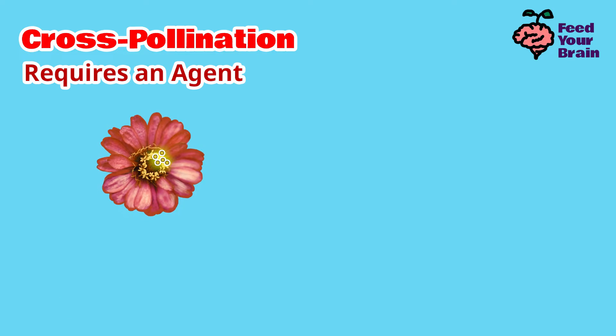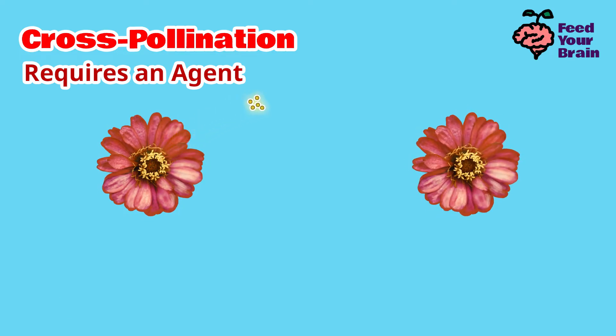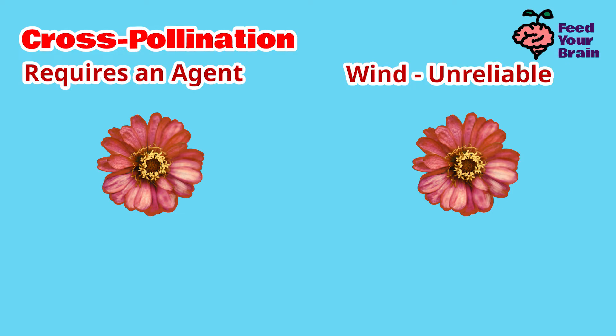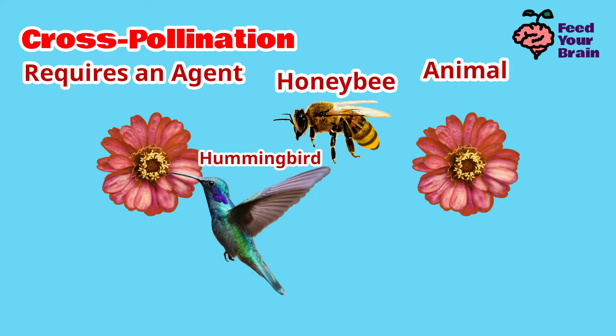Cross-pollination requires an agent to take pollen from one flower and carry it to another flower. The agent can be the wind, though that is not common as it is difficult to achieve. The agent can also be an animal. The most common pollinator is the honeybee. Hummingbirds are also pollinators. Beetles, such as ladybugs, are pollinators.